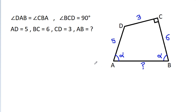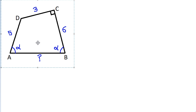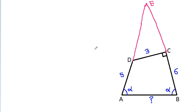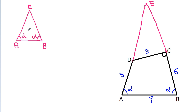If we extend AD and BC, suppose this point is E. Then in triangle ABE, these two angles are equal, so AE will be equal to BE.